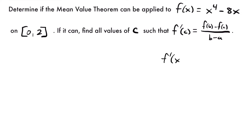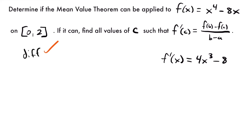Taking the derivative: f′(x) = 4x³ − 8, using the power rule — multiply by the exponent 4 and subtract 1 from the exponent to get 4x³, and the derivative of −8x is −8. This derivative is continuous on our interval; you can plug any value between the endpoints and the function is defined. So the function is differentiable and, because differentiability implies continuity, also continuous on this interval. We can now apply the mean value theorem.